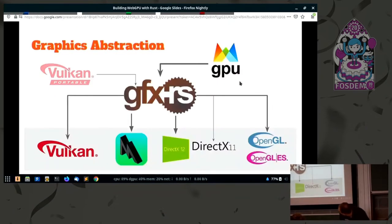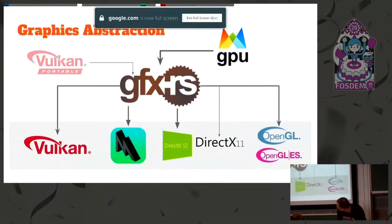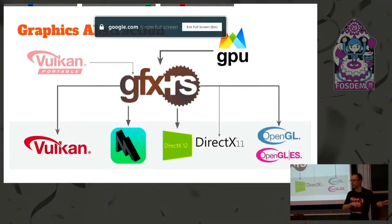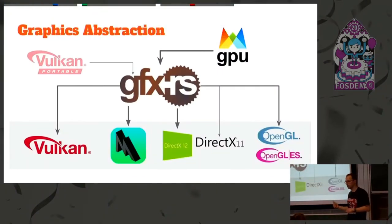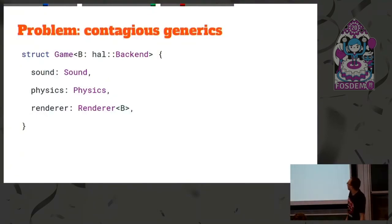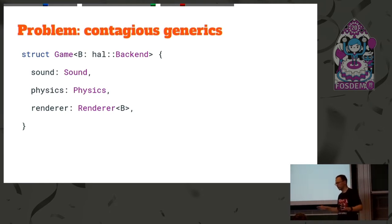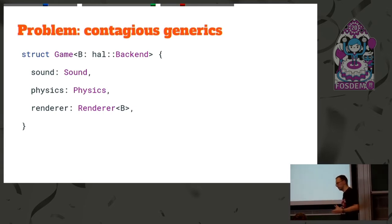If you don't know what GFX is, I encourage you to rewind two years back where me and Marcus from the GFX team were describing it on a very similar slide. One problem we had with GFX that is solved here: if your rendering depends on the backend and we use generics for the backend, then it becomes contagious — your whole game has to depend on the backend type, which is very inconvenient. And you can switch backends at compile time if you want to.